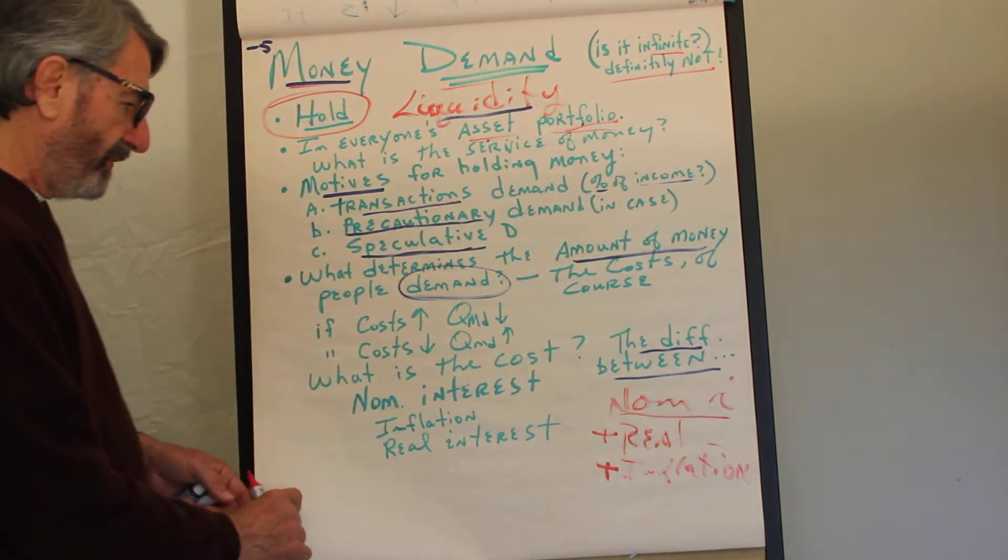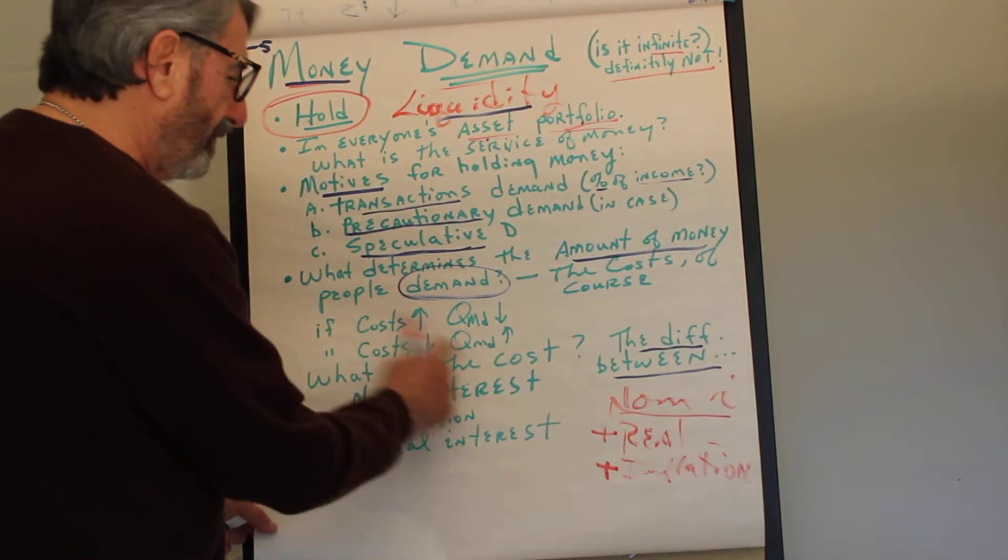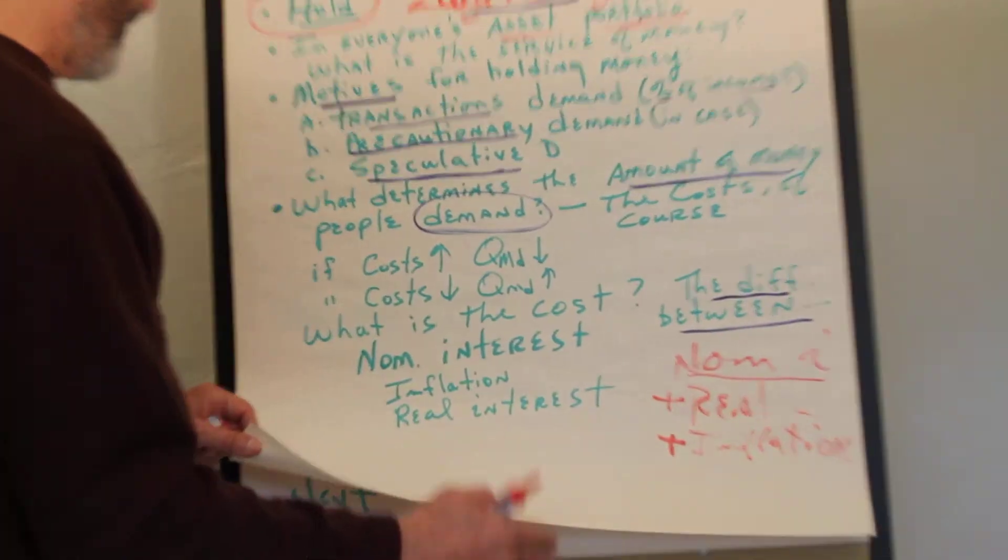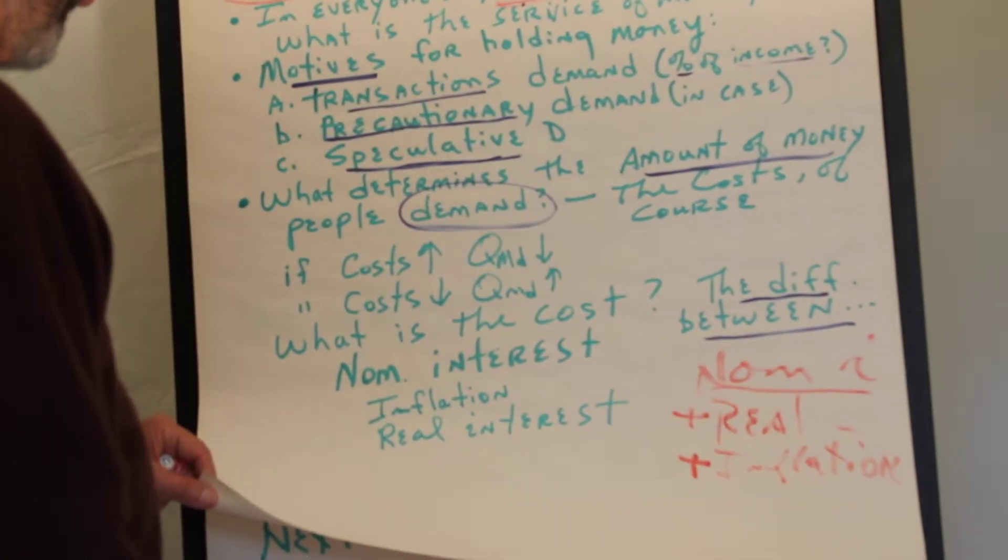And that's why it's determined to be the cost of holding money. If the cost of holding money, that is nominal interest, goes up, the people will hold less. If the costs go down, they're willing to hold more.